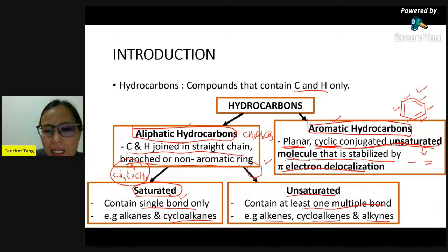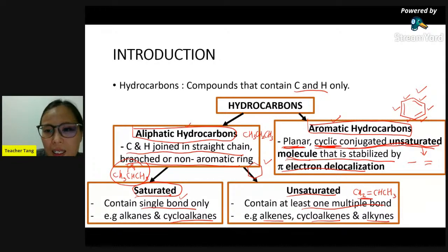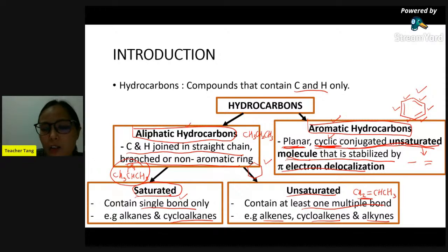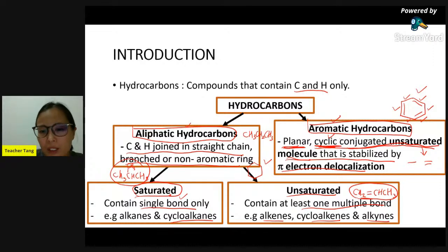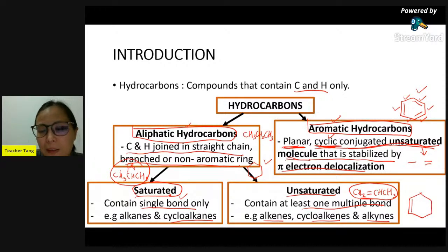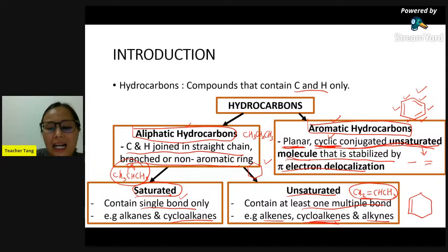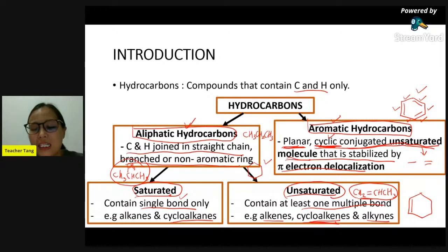Alkane is not aromatic because it is not a ring and does not have the conjugated unsaturated molecule. Even cycloalkane - it does not have alternating single-double bonds, so cycloalkane is also an unsaturated aliphatic hydrocarbon. The aromatic hydrocarbon we are going to look at in detail in the next chapter.